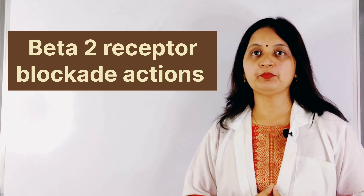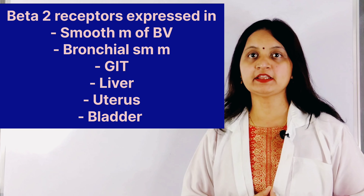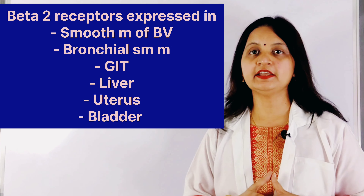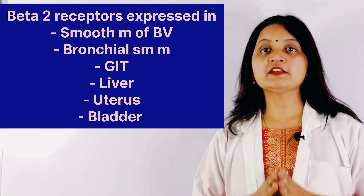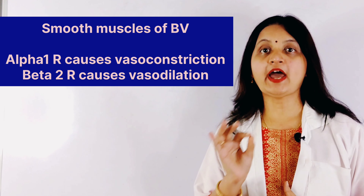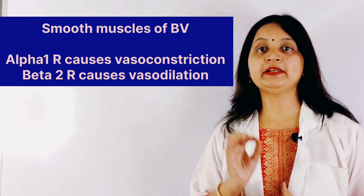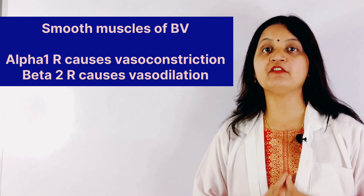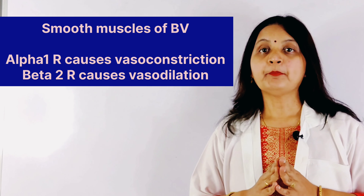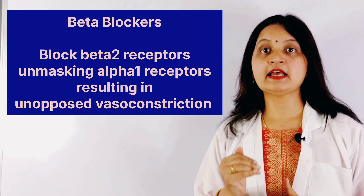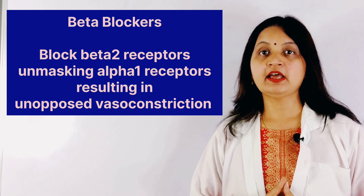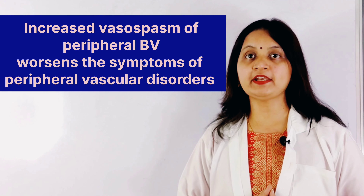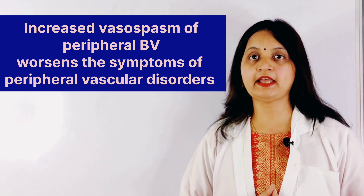Next, we move on to beta 2 receptor blockade actions. The beta 2 receptors are expressed mostly in the smooth muscles of the peripheral blood vessels, bronchial smooth muscles, GI tract, liver, uterus, and bladder. In the smooth muscles of the blood vessels, both beta 2 and alpha 1 receptors are present. Stimulation of beta 2 receptors results in vasodilation, while stimulation of alpha 1 receptors results in vasoconstriction. Therefore, beta blockers by blocking the beta 2 receptors result in unopposed vasoconstriction, resulting in vasospasm in the peripheral blood vessels, which worsens the symptoms of peripheral vascular disorders such as Raynaud's disease and frostbite.